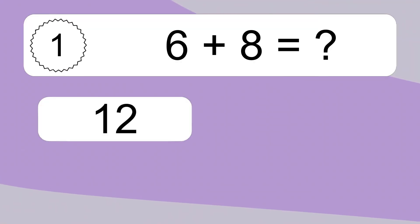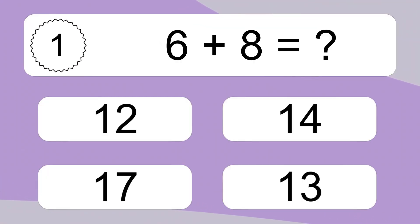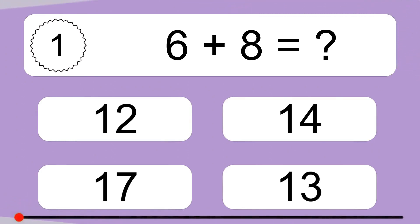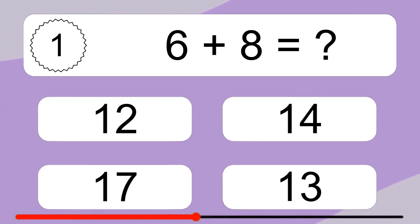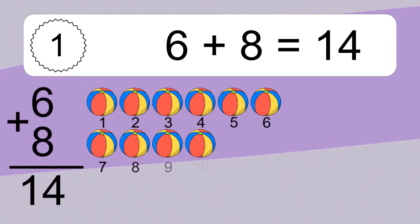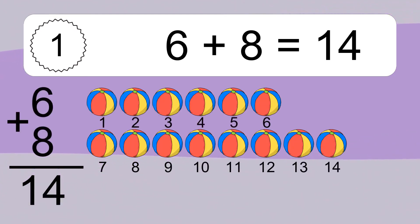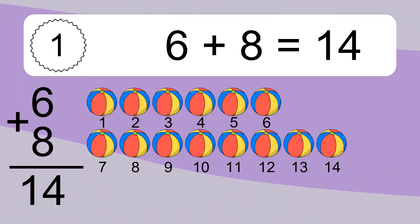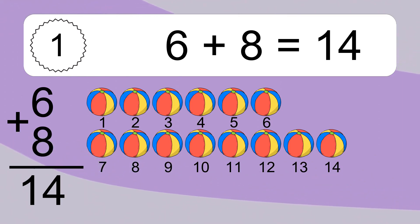Six plus eight equals what? Six plus eight equals fourteen. Let's count it: one, two, three, four, five, six, seven, eight, nine, ten, eleven, twelve...